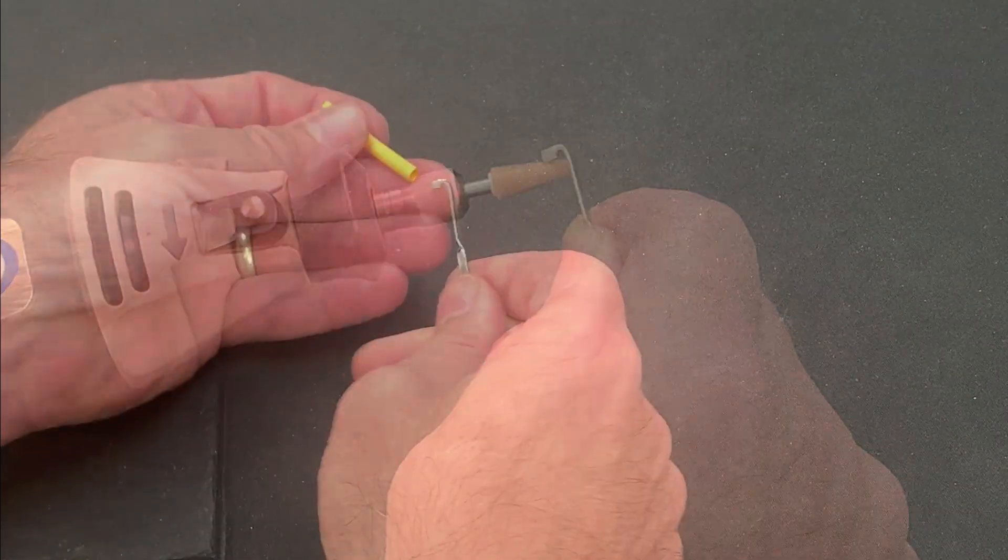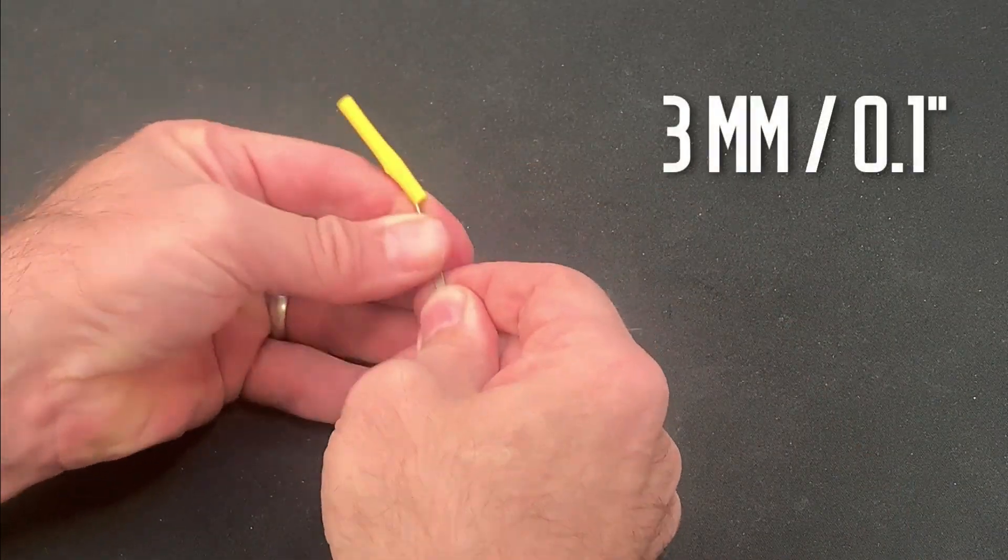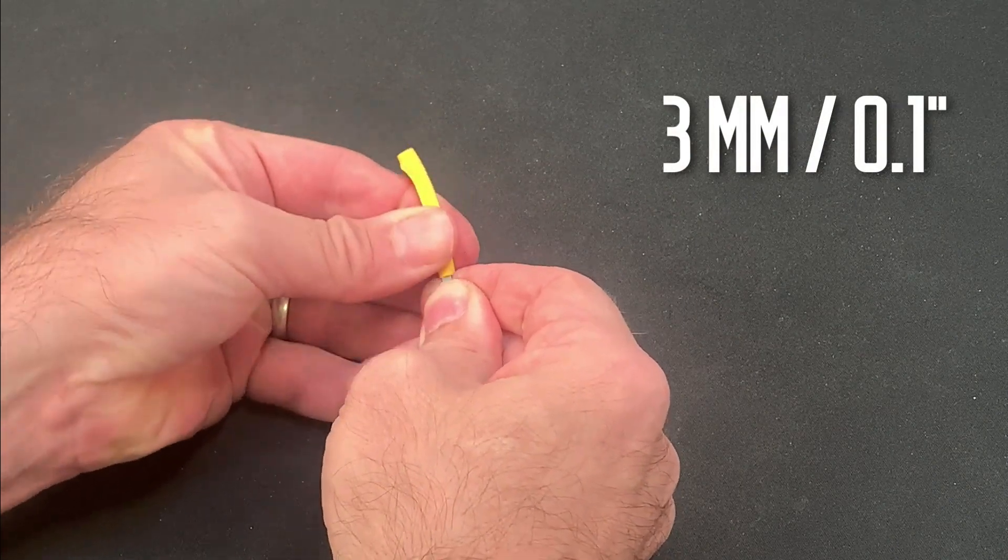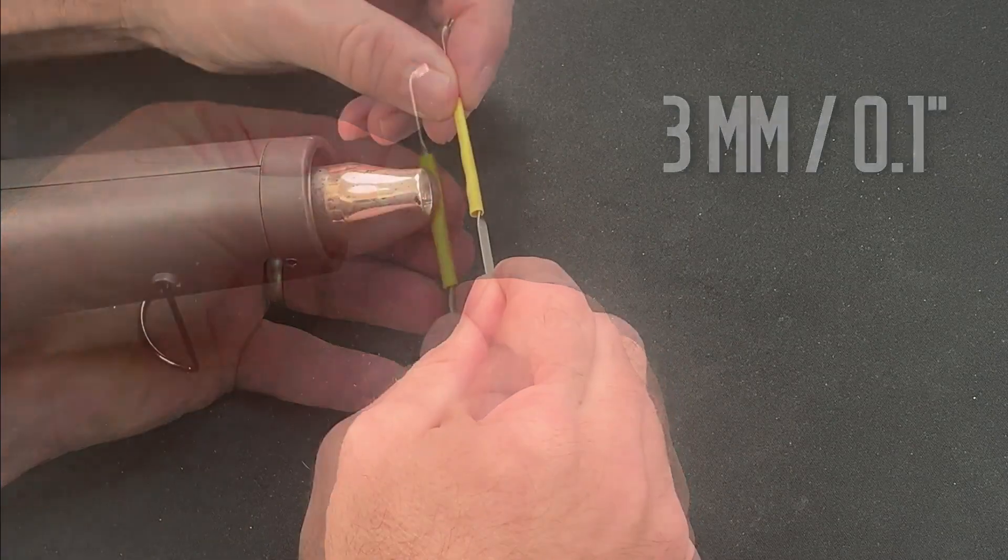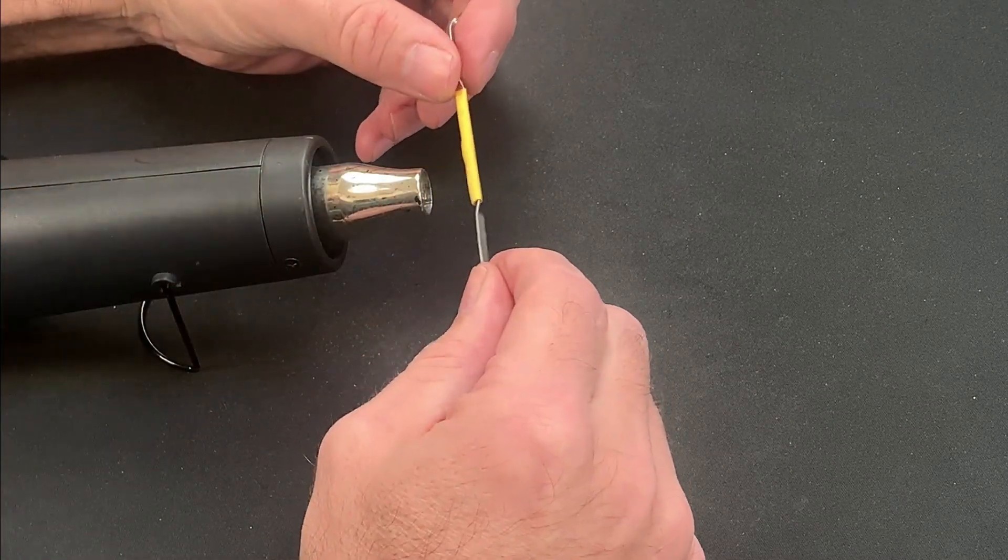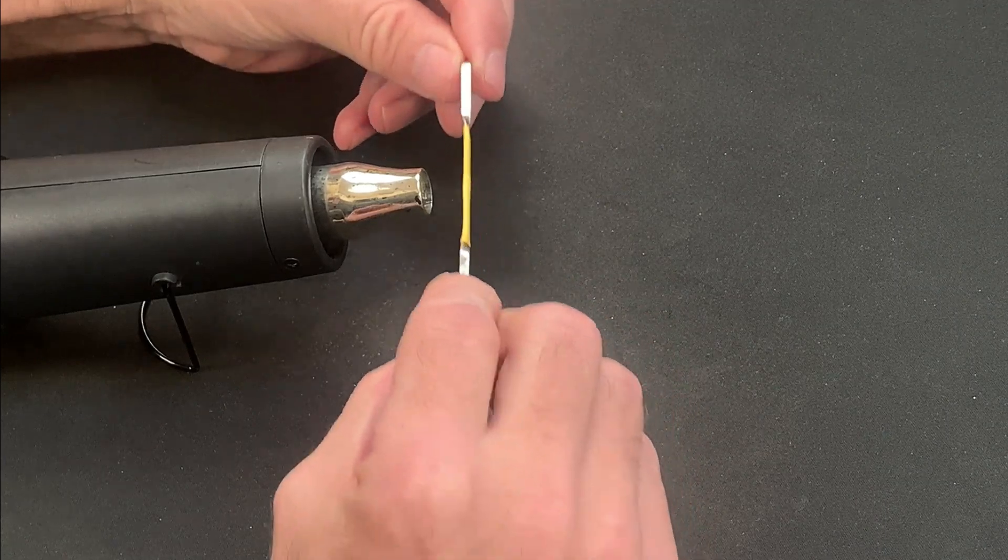Then it's just a case of slipping on a tube of heat shrink material. In this case I'm using a three millimeter or 0.1 inch sheath and then apply a heat source to activate the material. I like to use a crafter's heat gun because it doesn't scorch the plastic surface and results in a nice even finish.